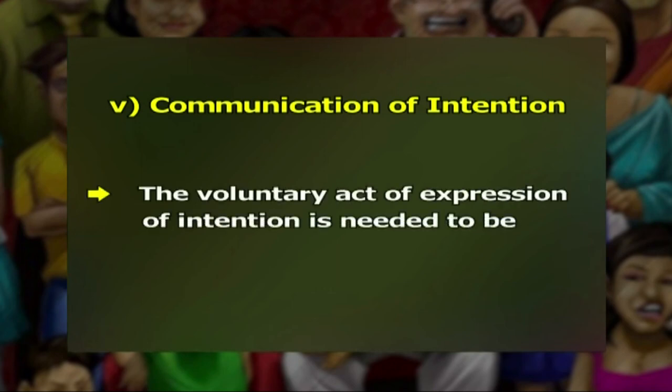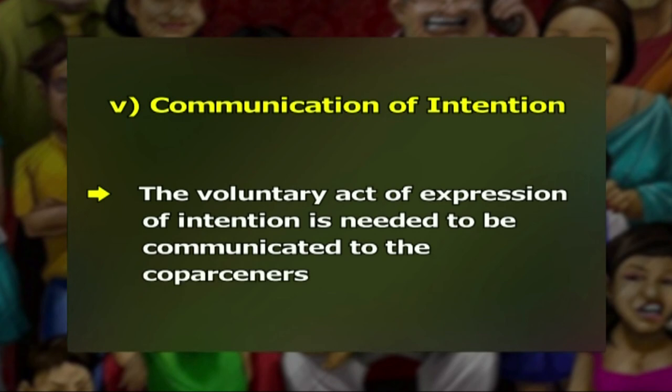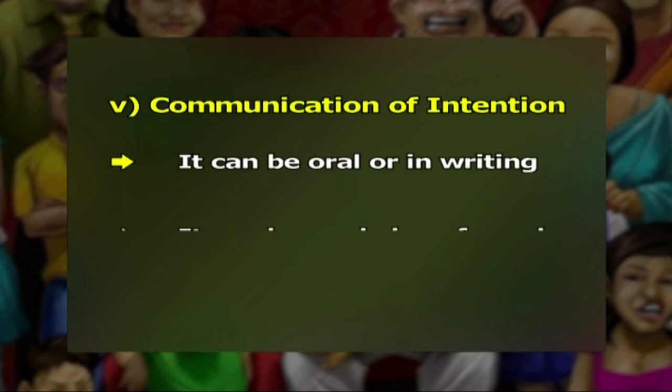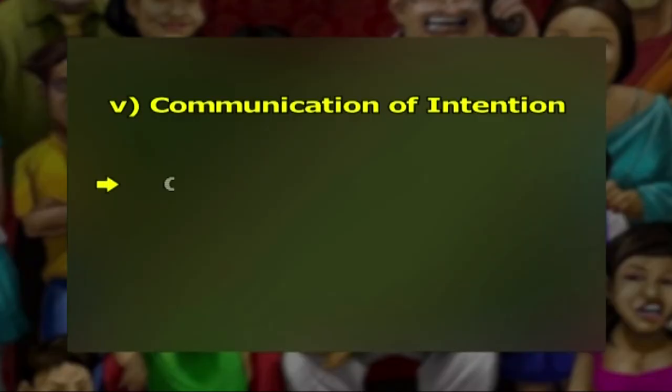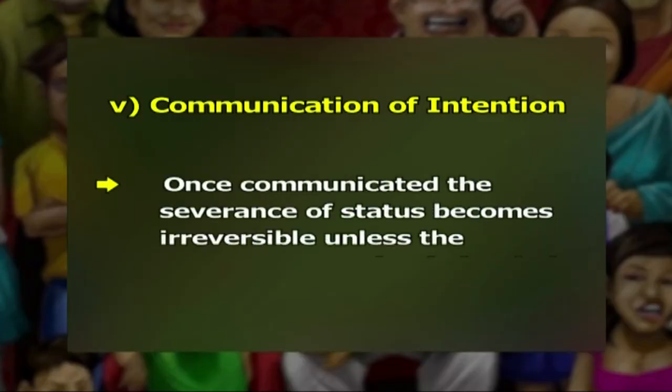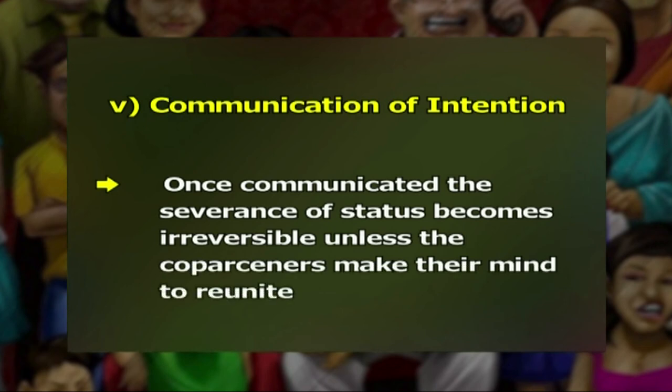The expression must be unequivocal, clear, and unambiguous. He can express by making a mere declaration like 'I am separate from thee' or by other similar words. Words enough to clarify the intention of separation are sufficient and no particular words are required. The voluntary act of expression of intention needs to be communicated to the co-parseners. It can be oral or in writing — by a formal legal notice, informal letter, or by institution of a suit for partition. Once intention to partition is expressed and communicated, it results in severance of joint status. Once communicated, the severance of status becomes irreversible unless the co-parseners decide to reunite.